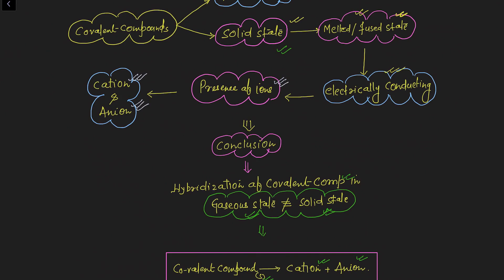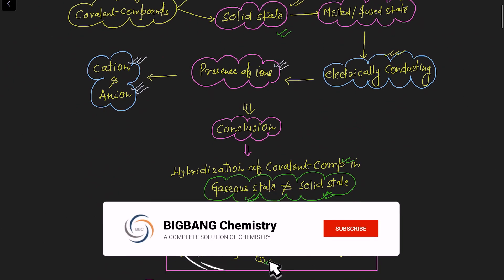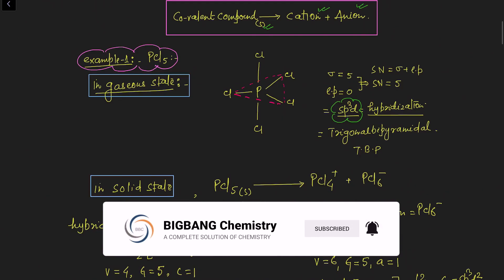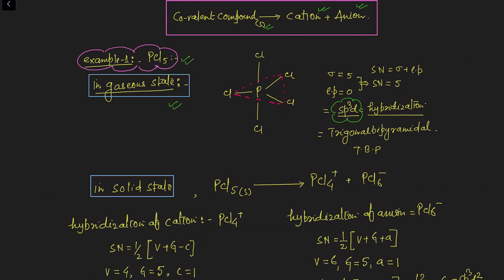Based on this discussion, we are going to discuss approximately 10 examples in which a compound in gaseous state shows different hybridization and in solid state shows a different type of hybridization. The first example is PCl5. The steric number formula was discussed in the first video of this series, so watch that first. For PCl5, the steric number is five.